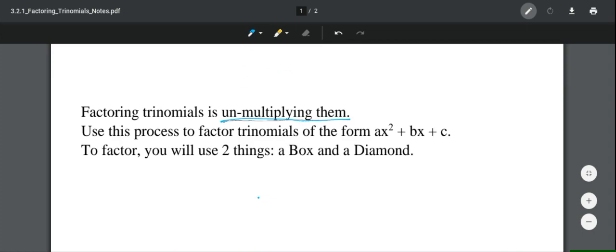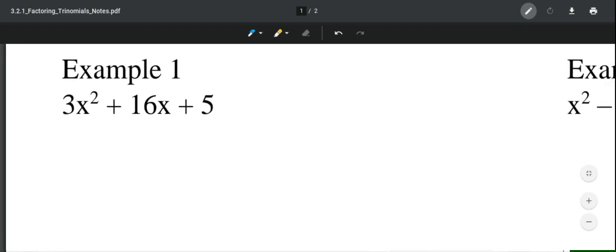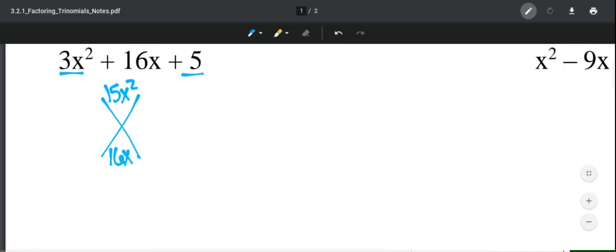So use this process to factor trinomials in the form of this. Every trinomial that we see has to be in that form for box and diamond to work. So here is one example. We're first going to do our diamond. You are going to take the first term and the last term and multiply them. So 3 times 5 is 15, so 15x² goes on the top. Now your middle term goes on the bottom. That's your first step. First times the last goes on the top, middle goes on the bottom.